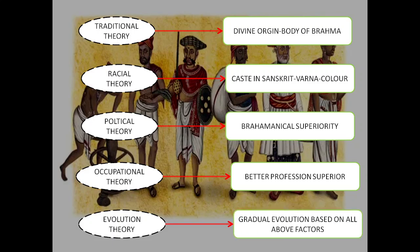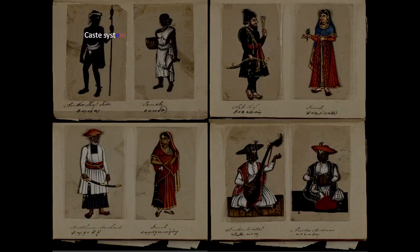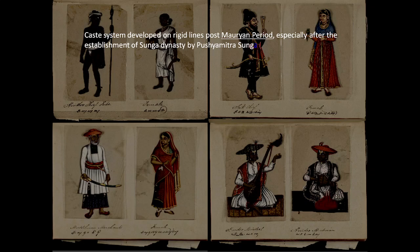The evolution theory is based on traditional, racial, political, and occupational factors. This caste system was developed rigidly during the post-Mauryan period. The Mauryans were associated with Shudras, though this is not yet fully confirmed. But in the post-Mauryan period, a dynasty known as the Shungas came to power, and they were Brahmins who rigidly organized this caste system.